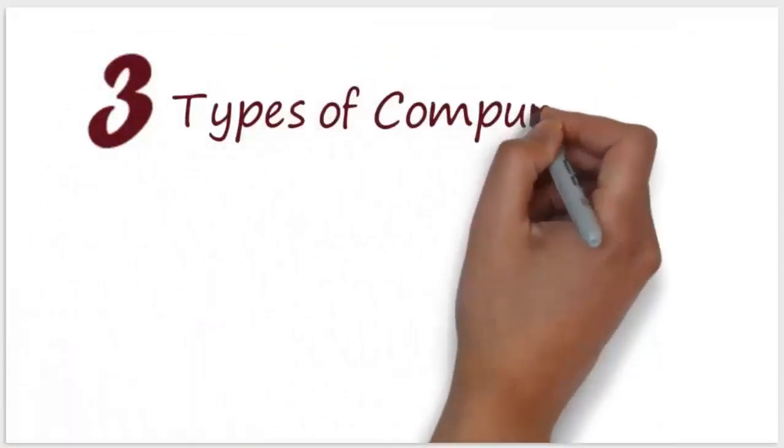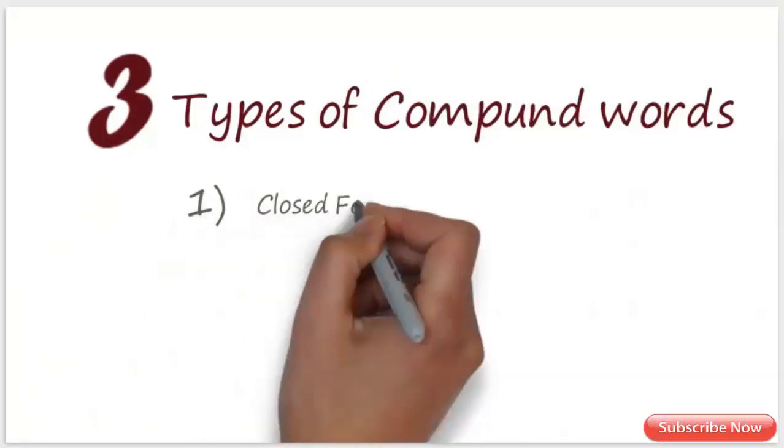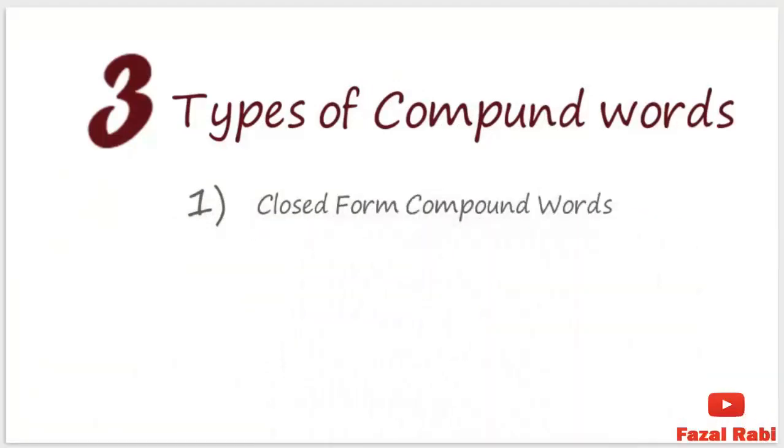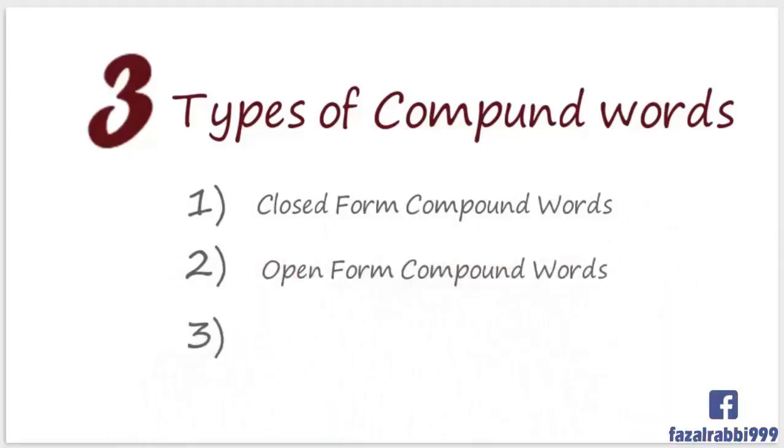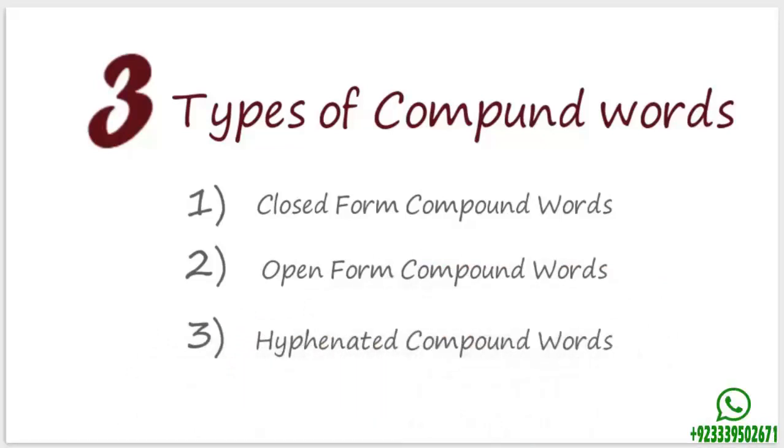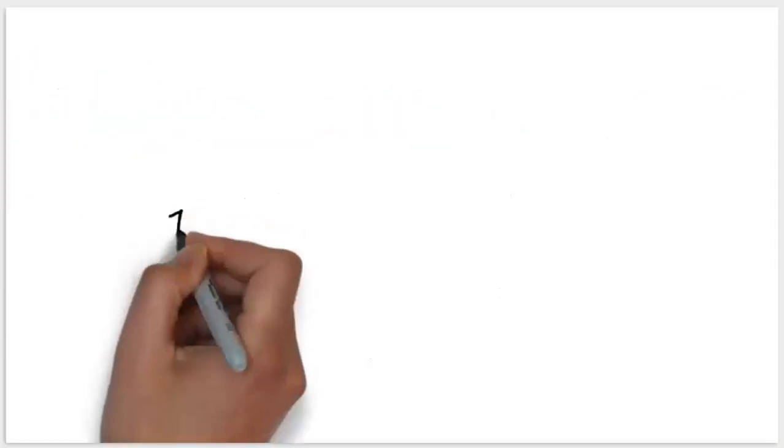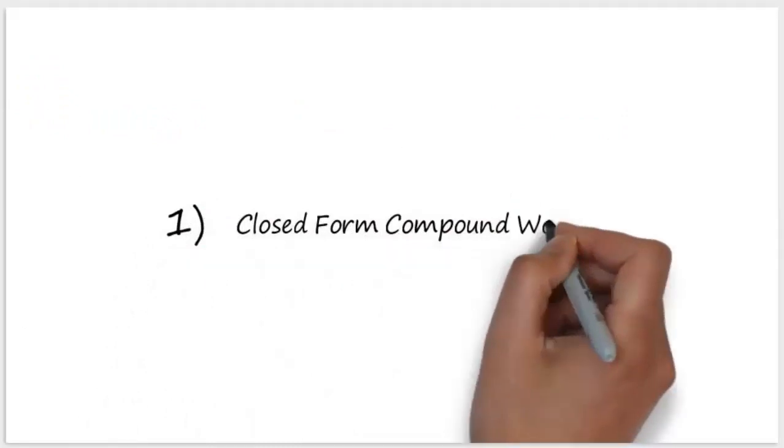Now there are three types of compound words: number one, closed form compound words; number two, open form compound words; number three, hyphenated compound words. Now let us define them one by one with examples. Number one: closed form compound words.